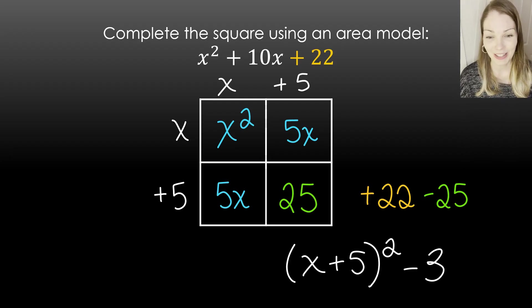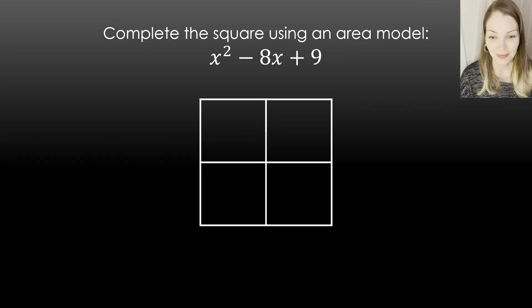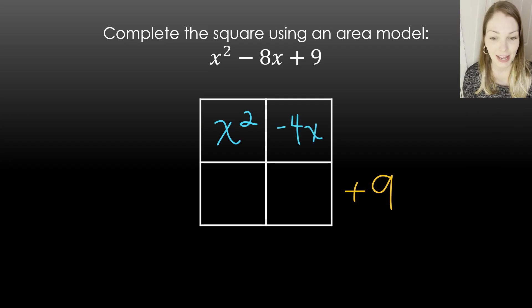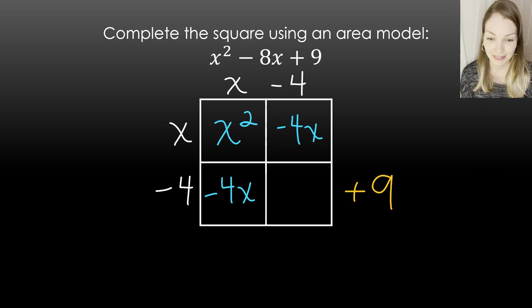All right, let's do one more. I'll let you try this one out. And now here we go. So let's scoot that plus 9 over to the side. Fill in our x squared. Split up the x's. So we have minus 4x and minus 4x. Now we know our factors. Now we know how many units go in the area. Positive 16. If I add 16, I need to subtract 16. Now I can see my factors. x minus 4 squared. And then minus 7.